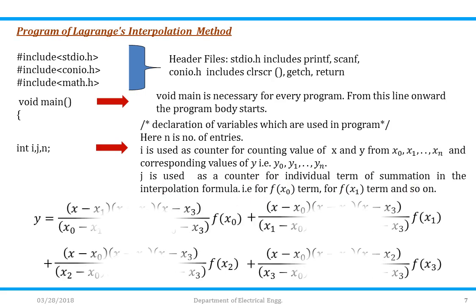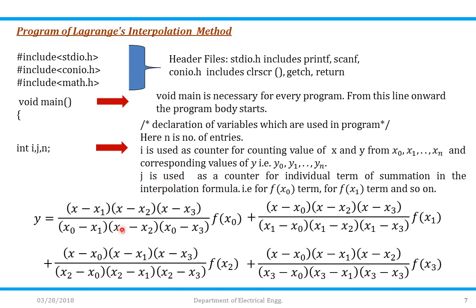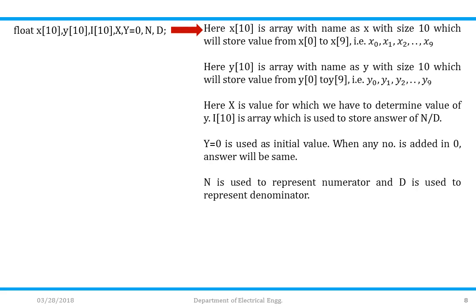j is used for counting each term: the first term f(x0), the second term f(x1), the third and fourth terms, and so on. float x[10], y[10], l[10], capital X, Y=0, n and d. Here x[10] is an array storing values x0 to x9; y[10] stores y0 to y9. Capital X is the value for which we determine Y. l[10] stores the answer for numerator divided by denominator. Y=0 is the initial value — any number added to 0 gives the same answer. n represents the numerator and d represents the denominator. clrscr clears the previous output when the new program executes.